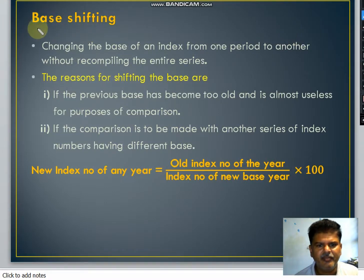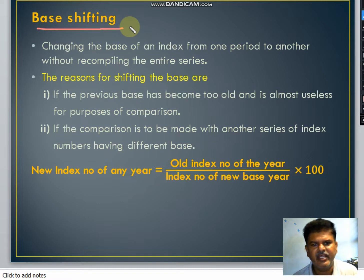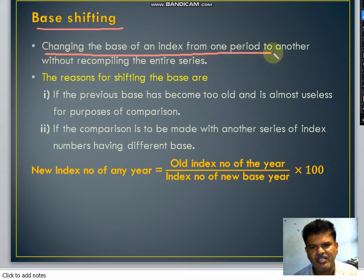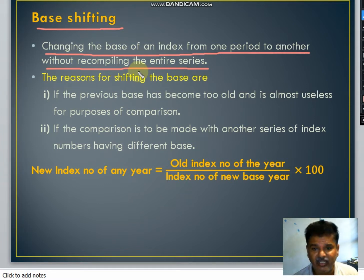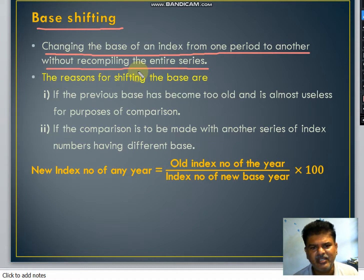Now we will discuss base shifting in index numbers. Base shifting means changing the base of an index from one period to another without recompiling the entire series — that is, without again preparing or constructing the entire series of an index number. We can just shift the base so that references can be made very easily.